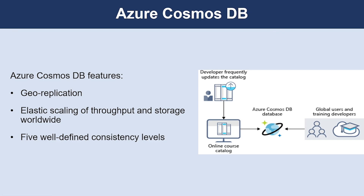Now let's look into Azure Cosmos DB. Azure Cosmos DB is a globally distributed database service. It supports schema-less data that lets you build highly responsive and always-on applications to support constantly changing data. You can use this feature to store data that is updated and maintained by users around the world.